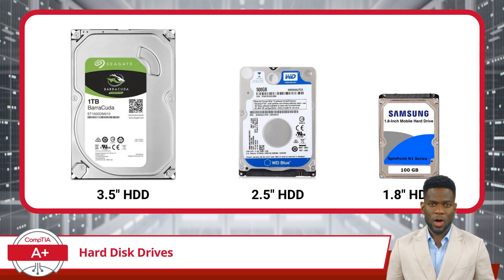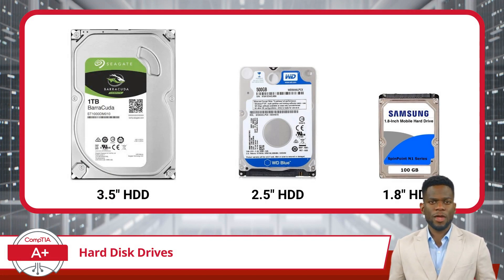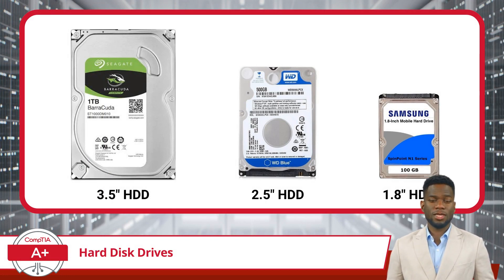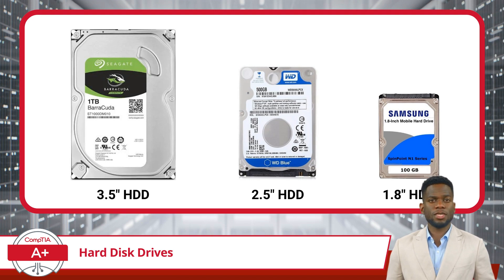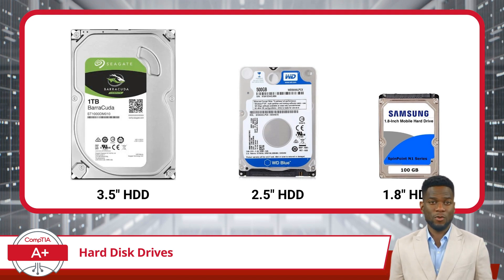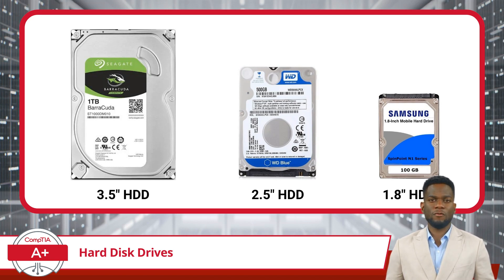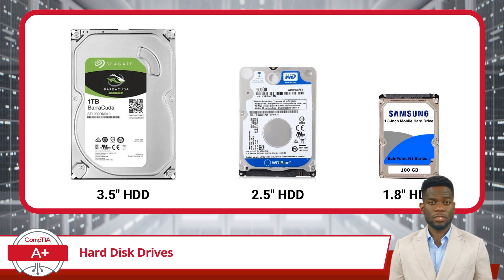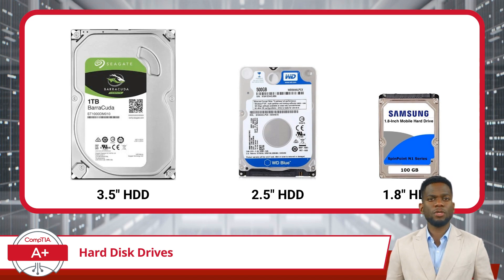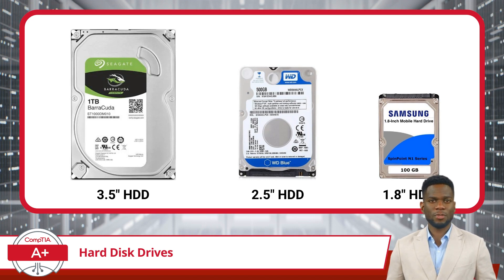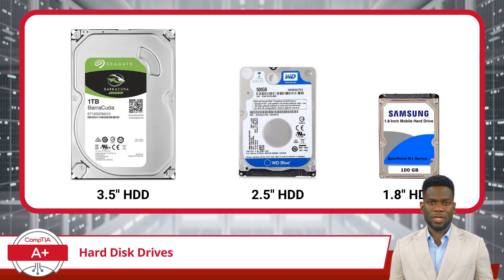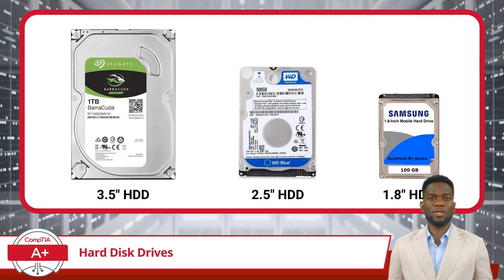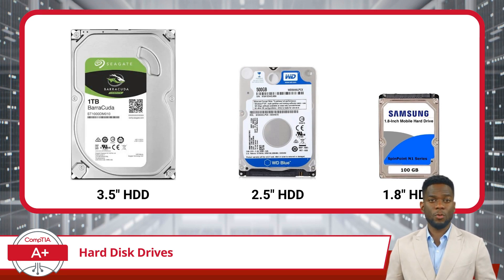Lastly, we have the form factors for hard disk drives. Form factors refer to the physical dimensions and specifications of the HDD, influencing its compatibility and usage in various devices. Among the most prevalent sizes are 3.5 inches and 2.5 inches, each catering to distinct computing needs. The 3.5-inch form factor is a staple in desktop and server computing setups. Renowned for its larger size, this form factor accommodates spacious storage capacities, making it ideal for desktop computers and server and data center deployments. The generous physical dimensions also allow for enhanced airflow and cooling within desktop cases, contributing to optimal performance and longevity.